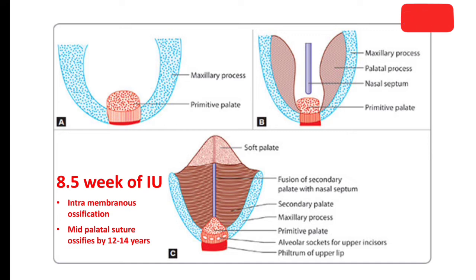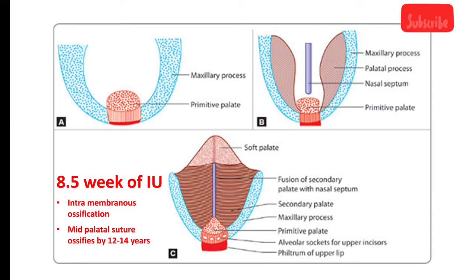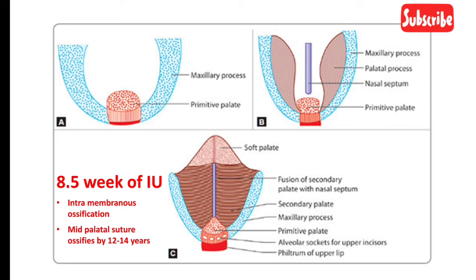In image A you can see the primitive palate formed from the frontonasal process, and the brownish palatal processes developing towards the nasal septum from the maxillary process. Both palatal processes fuse with the mid-palate and raphe. According to one theory, both halves of the palatal processes fuse in the midline first, then fuse in the anterior region with the primitive palate, and posteriorly there is a soft palate where no ossification occurs. It is very important to keep in mind that the mid-palatal suture ossifies by 12 to 14 years.